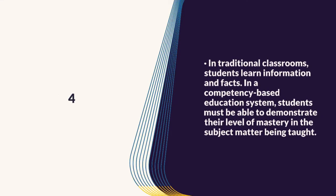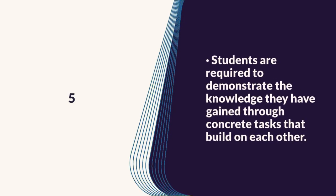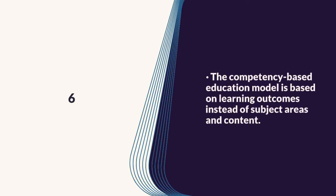In traditional classrooms, students learn information and facts. In a competency-based education system, students must be able to demonstrate their level of mastery of the subject matter being taught. Students are required to demonstrate the knowledge they have gained through concrete tasks that build on each other. The competency-based education model is based on learning outcomes instead of subject areas and content.